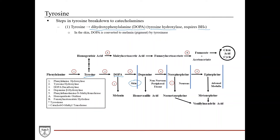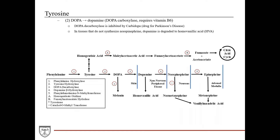In skin, DOPA can be converted into melanin, the pigment in skin, by the enzyme tyrosinase. In non-nervous peripheral tissue — any tissue that's not neurons — DOPA is then converted into dopamine by the enzyme DOPA decarboxylase, which also requires vitamin B6 as a cofactor.